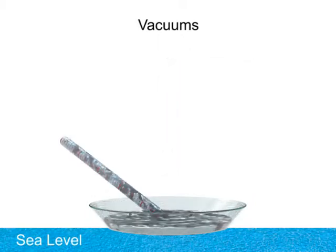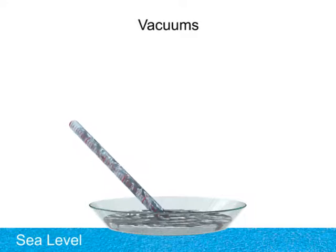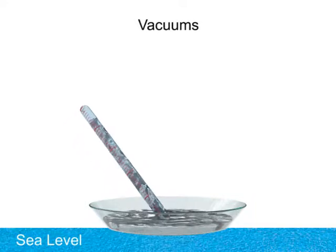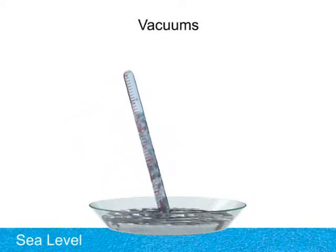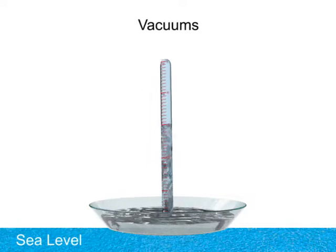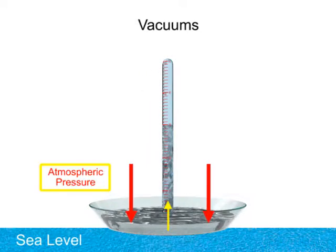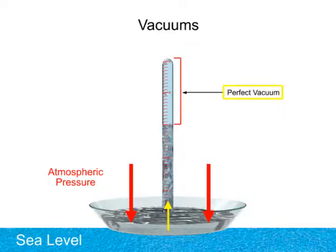The tube is then raised to a standing position without allowing air inside. The mercury level falls until a balance is reached between the weight of the mercury in the column and the atmospheric pressure against the surface of the mercury pool. With this method, the empty space at the top of the tube forms a perfect vacuum.